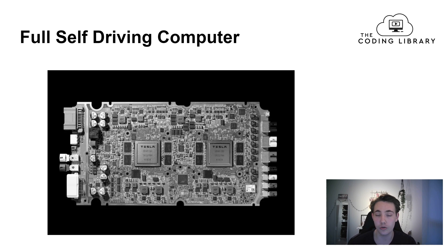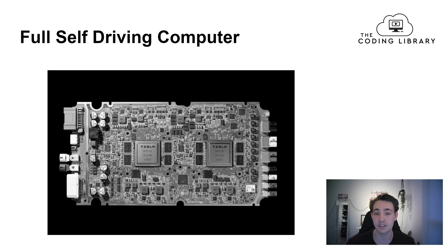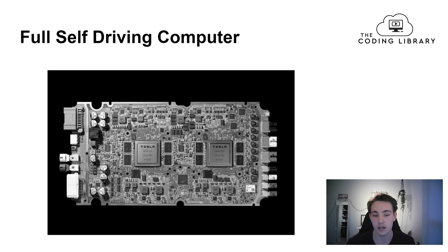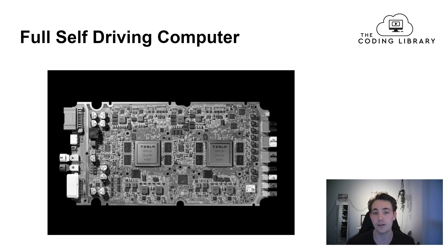Tesla is also working on the Dojo computer, a supercomputer in a data center that can train neural networks faster. There's also a possibility in the future to use Dojo in vehicles to send frames and information to the Dojo supercomputer and receive back predicted actions. But right now, the self-driving computer inside the car runs the neural network model locally, and the outputs get fed to the accelerator and steering wheel.